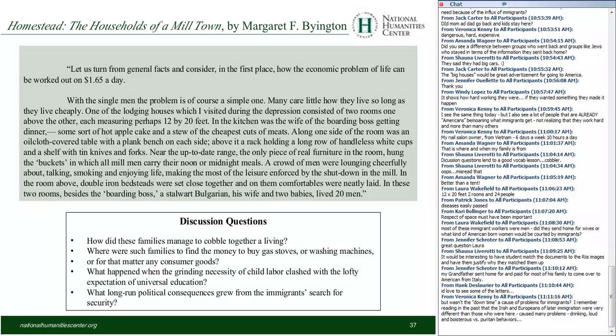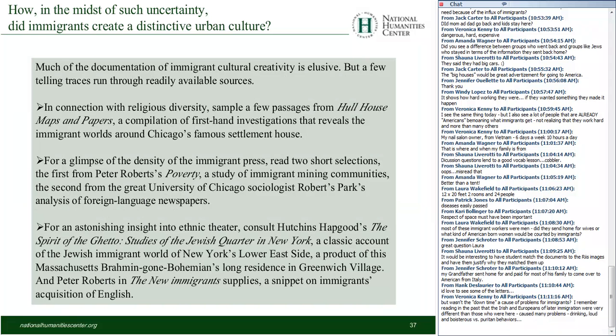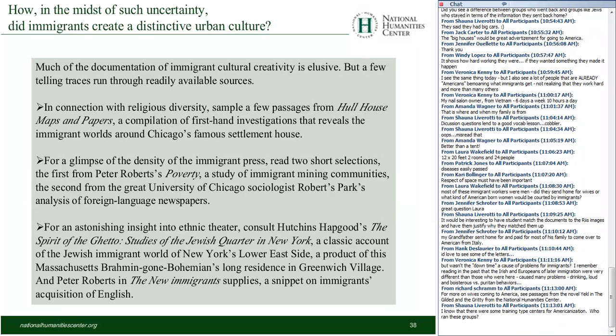Moving on to the fourth part about the creation of a distinctive urban culture. Immigrants had to communicate. They communicated massively with people back in their homeland, and also amongst themselves in search of work, new locations, social ties, and political alliances. The world of immigrants is also a world of extraordinary forms of communication and cultural creativity — this drive toward communication takes the form of newspapers, ethnic theater, and the early entry of immigrants into the movie industry. All of that cultural creativity is quite extraordinary.